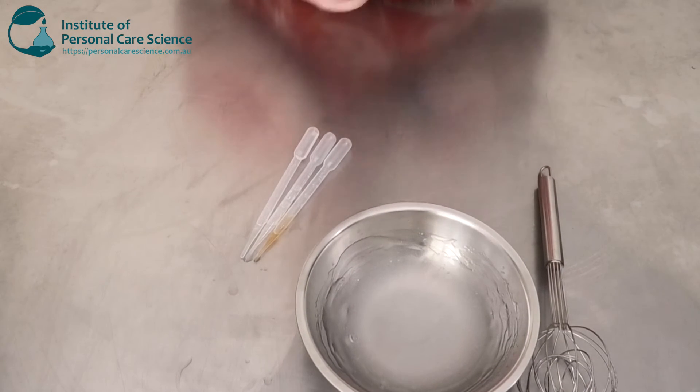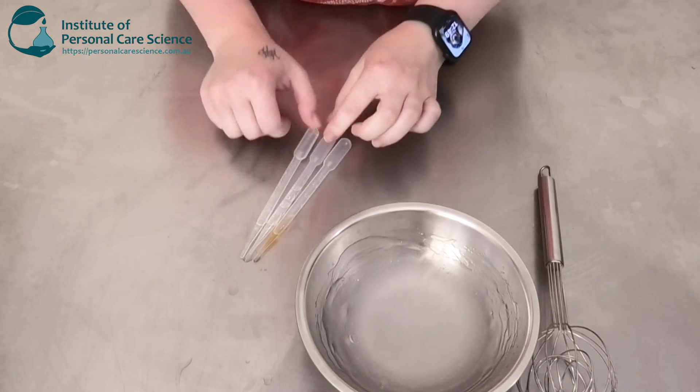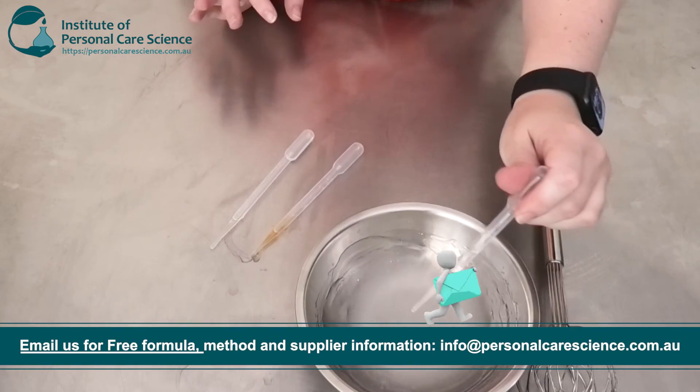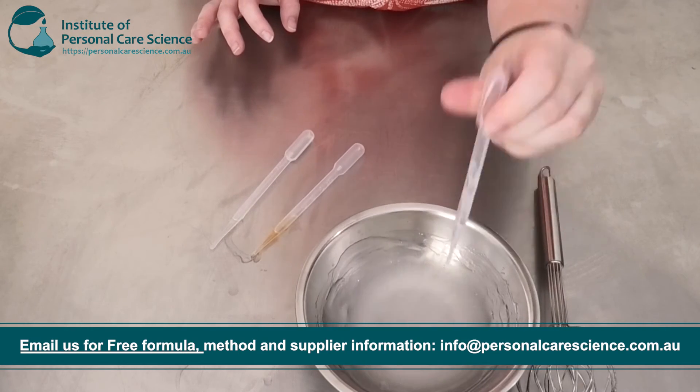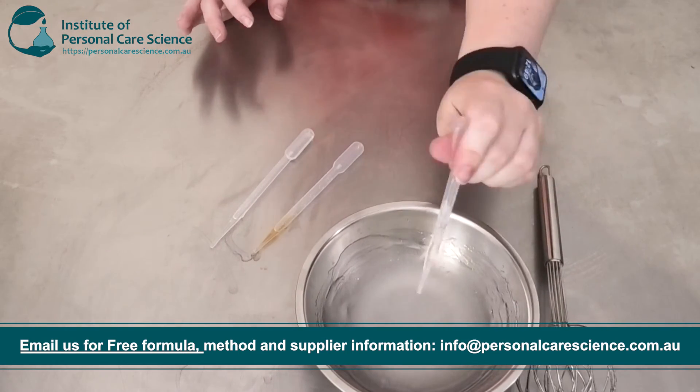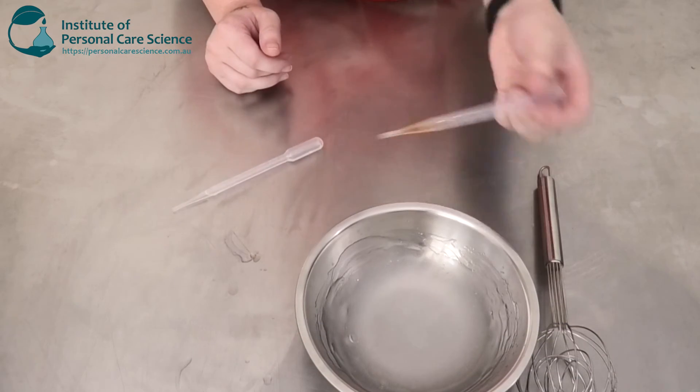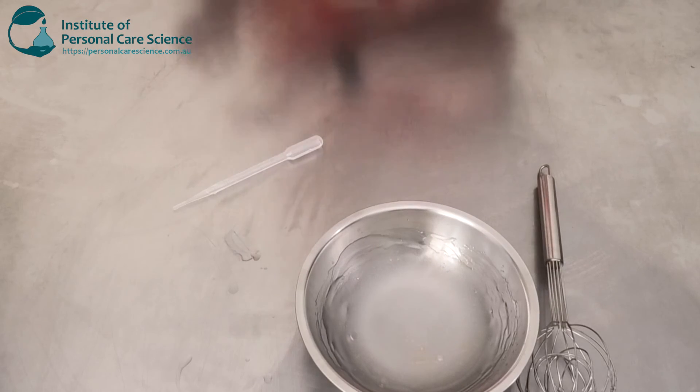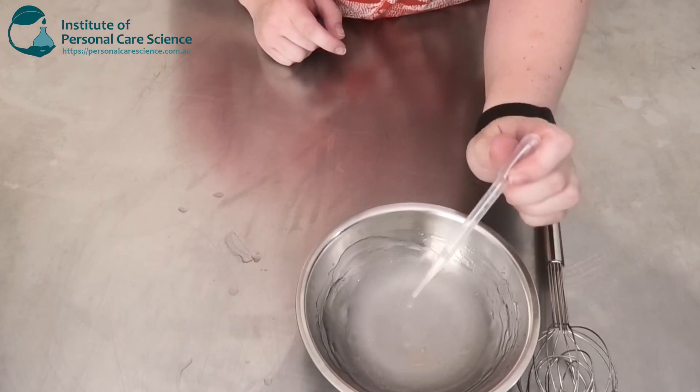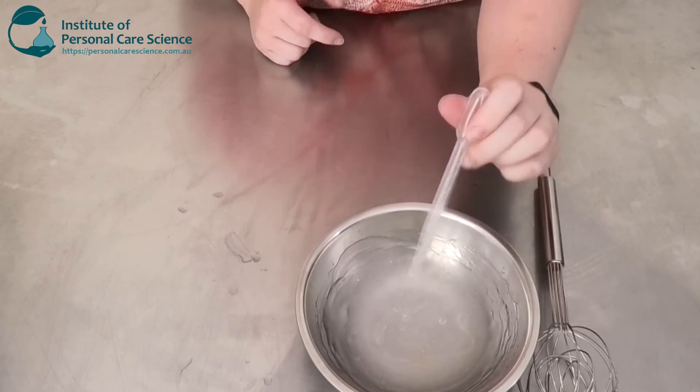Okay next I'm going to add a little bit of polyquot 7. This is just going to make the hair feel nice and also give it a nice little conditioning feeling. I'm also going to add a bit of tocopherol because I've used natural plant oil so just a little bit of that. And last but not least I'm also going to add my preservative.